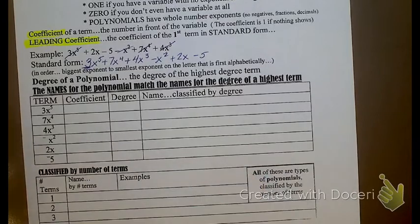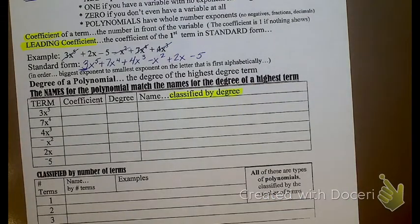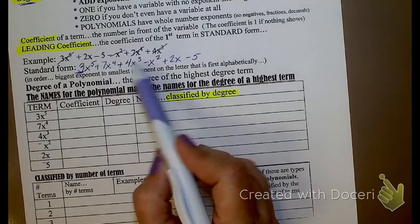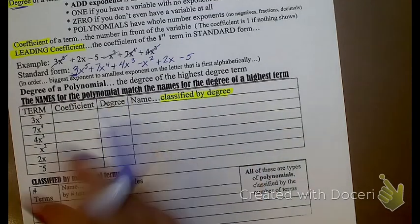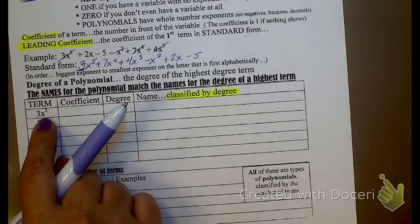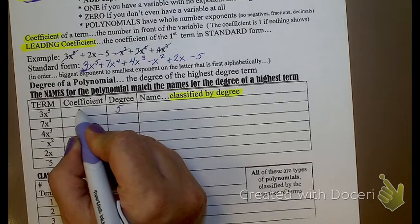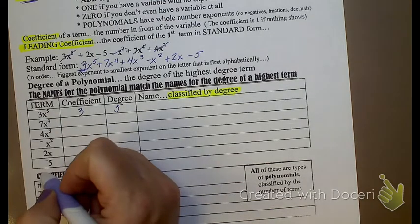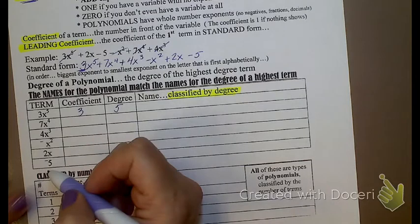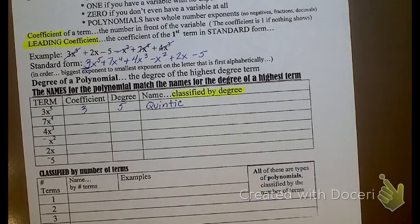So we're going to classify polynomials in two different ways. First, we're going to classify them by the degree. We're going to take these terms from this polynomial and just look at them individually. If I look at just that first term, what's the degree of that term? It's a fifth degree. What's the coefficient of that term? 3 — the 3 is what's in front. Anyone know what we call a fifth degree polynomial? A quintic. You don't use that word very often, but in case it comes up, a fifth degree polynomial is called a quintic.